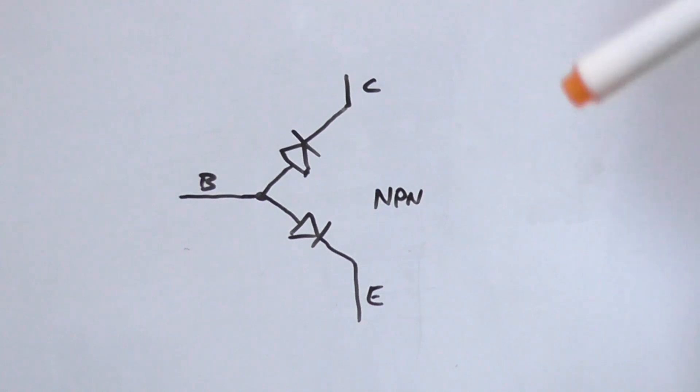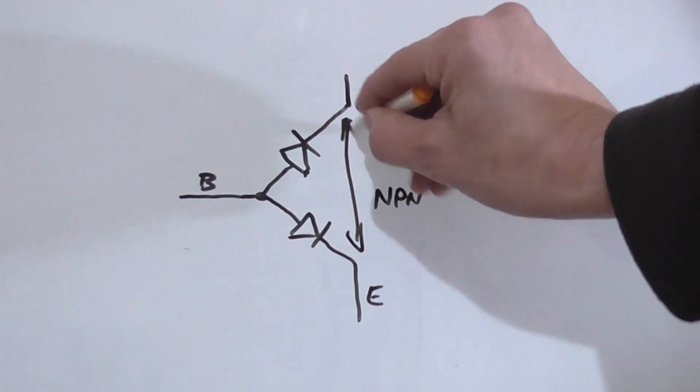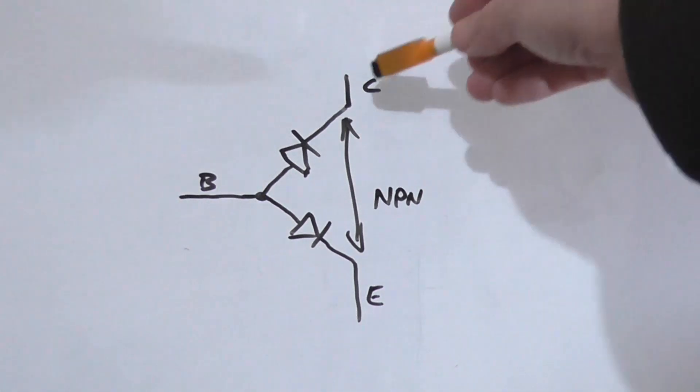Now we may see a dead short between these two junctions and that could be because something internal to the transistor has actually welded itself together because it went past the safe operating area curve of that transistor. It was over-volted, too much current was flowing through it, inadequate heat sinking, stuff like that. And something's just melted and welded itself together between the collector and emitter.